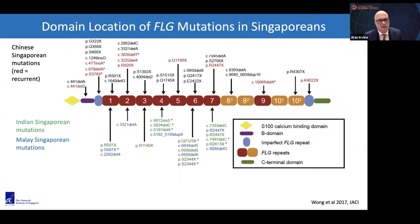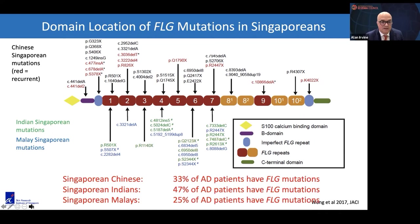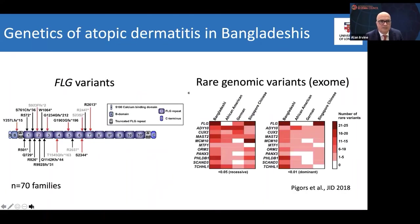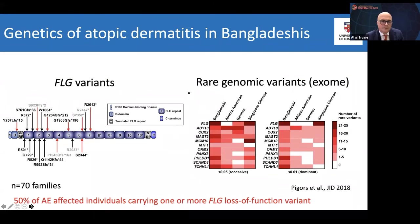Filaggrin mutations have occurred in most populations in ancient times and been preserved, though we're not entirely sure why they're selected for. Different populations give different spectra of mutations, but they're very common in nearly all populations. Among those with atopic dermatitis, about a third of Singaporean Chinese patients have mutations, 47% of Indian Singaporeans, and about one in four Singaporean Malays. Work with Bangladeshis living in East London also showed lots of Bangladeshi-specific mutations, with 50% of atopic eczema families carrying filaggrin mutations.